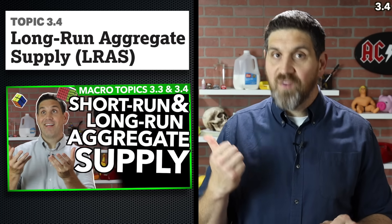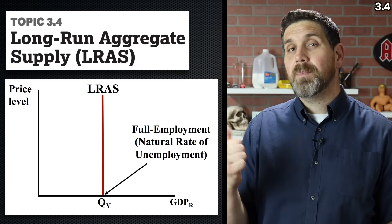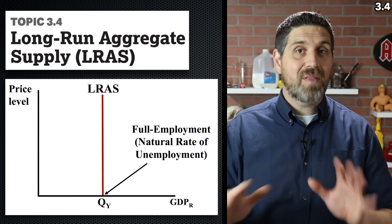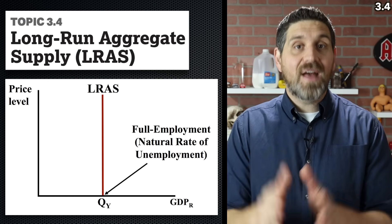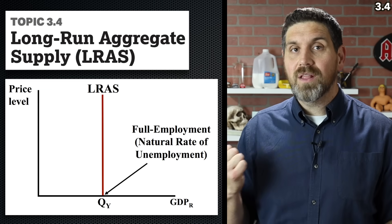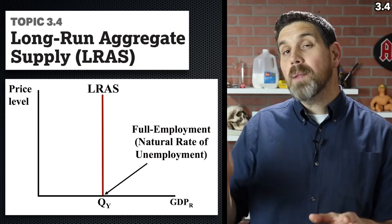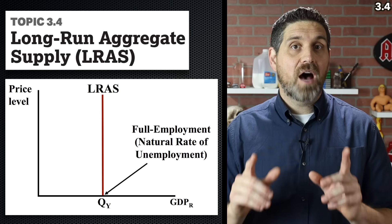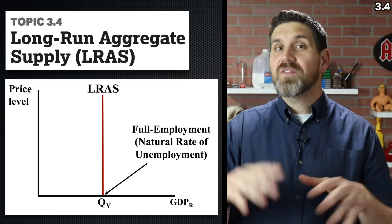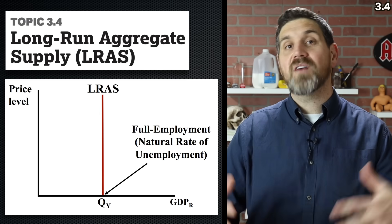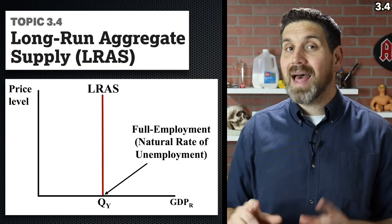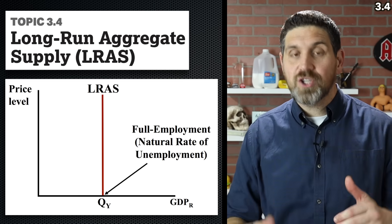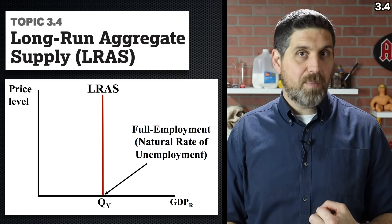That's topic 3.4. In the long run, there's no relationship between price level and real GDP. Whatever happens in the short run, eventually we'll be right back in the long run. That output represents the full employment output we'll produce at the natural rate of unemployment. This curve can shift if we have better technology and can produce more stuff in the long run. Jump into the study guide and answer all the questions for topics 3.3 and 3.4.